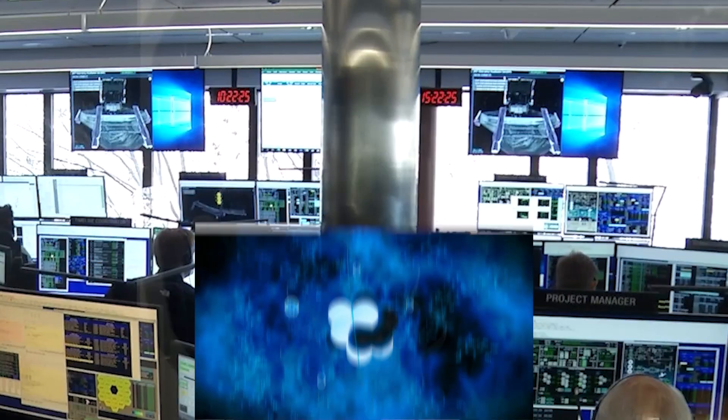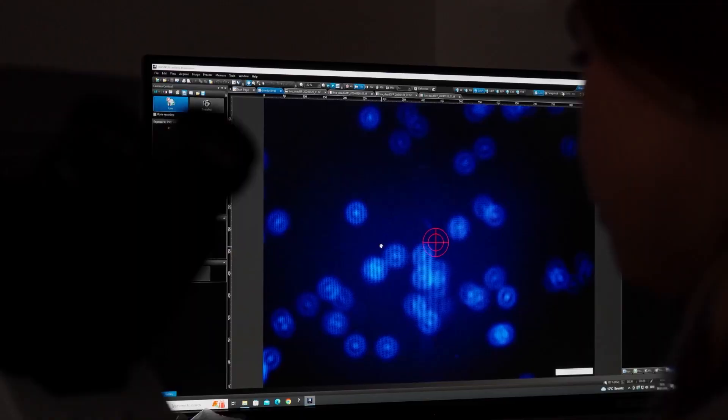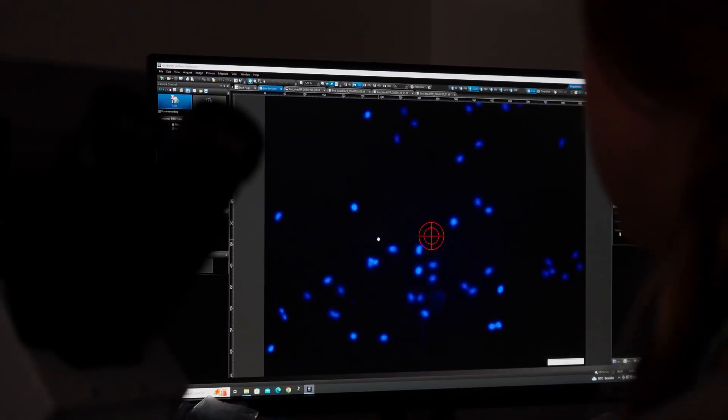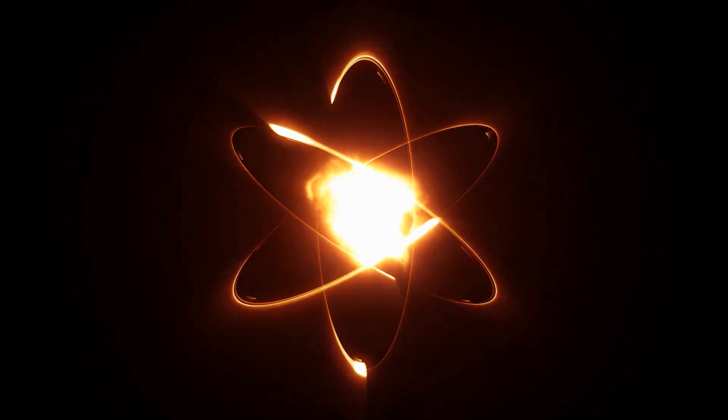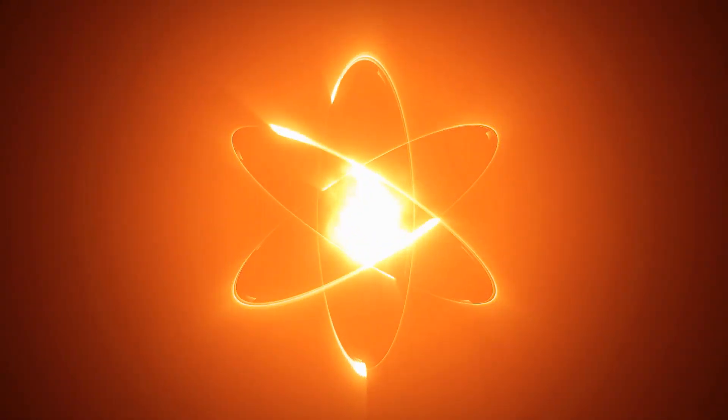The information, encoded in two classical bits, was sent to the team at Chamber B. They received the data, applied the corresponding operation to their photon, and then, success. The particle in Chamber B instantly assumed the exact quantum state of the original ion. It had worked.